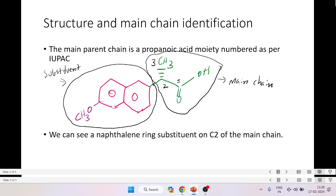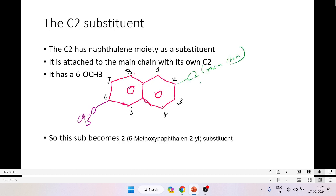Now we can see there is a naphthalene ring substituent on C2. Let us expand on the naphthalene ring substituent.